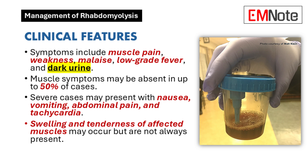Clinical Features. The symptoms of rhabdomyolysis are typically acute and include muscle pain, weakness, malaise, low-grade fever, and dark, often brown, urine. However, muscle symptoms may be absent in up to half of cases. Severe rhabdomyolysis can present with nausea, vomiting, abdominal pain, and tachycardia. Mental status changes may occur due to urea-induced encephalopathy. Swelling and tenderness of the affected muscle groups may be observed, though these signs are not always present.